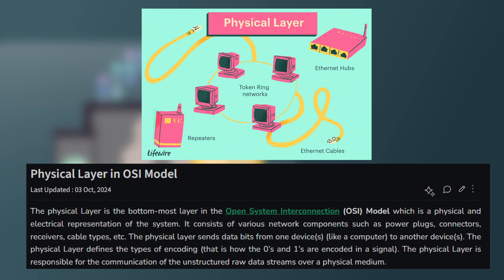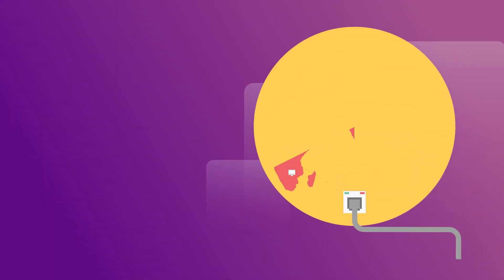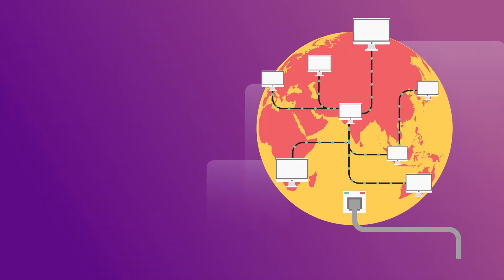Layer one is the physical layer. It's all about the hardware — cables, switches, routers, and how data is physically transmitted, like electrical signals or light pulses. If there's an issue at this layer, your network connection could fail completely. In cybersecurity, securing physical access to your hardware is crucial because if someone can physically access your network devices, they can easily cause damage or steal data.